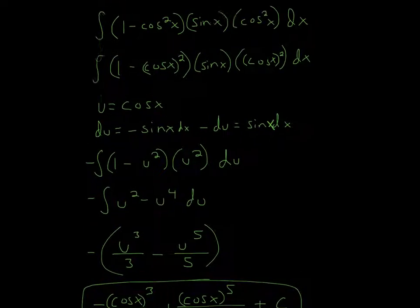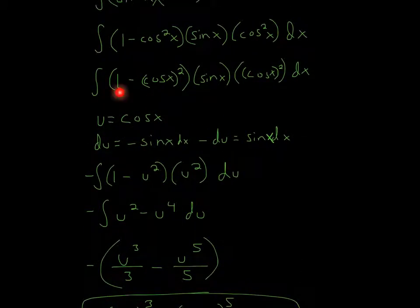So now since we know that, we can just plug in. So 1 minus u, because we say cosine is u, 1 minus u. And don't forget the negative, because it's negative du. So it's negative du. And then over here, since cosine, it'll be u squared. So it's 1 minus u squared u squared du.